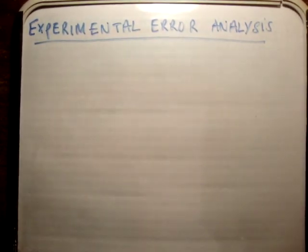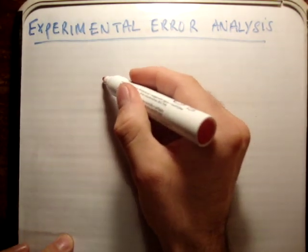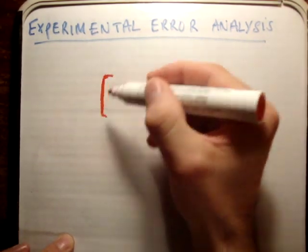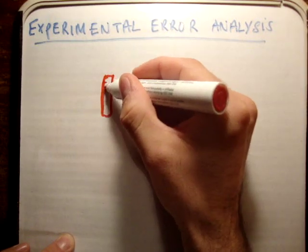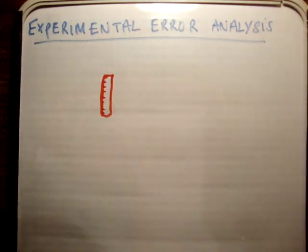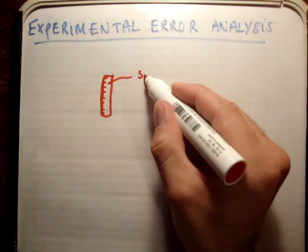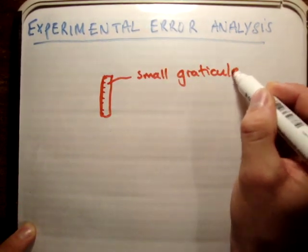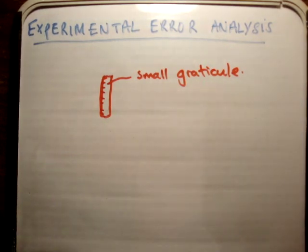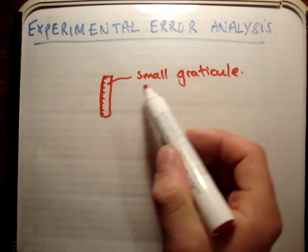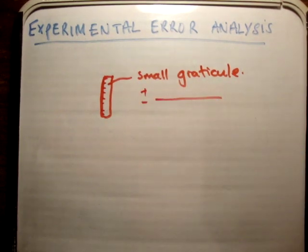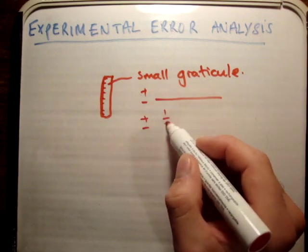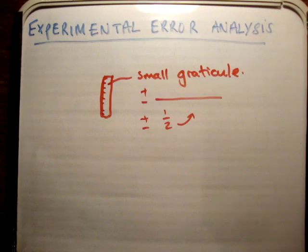Say if you pick up the vernier calipers — on your vernier calipers you'll often have a kind of drum with little markers. It's the same with every apparatus you use. You'll pick it up, you'll find the smallest graticule — the smallest unit of measurement. If you think that's as small as you can get it, then that's fine. You record it as plus or minus your smallest graticule. And if you can say whether it's in between, you might be able to say it's plus or minus half of your smallest graticule. That's your actual error.